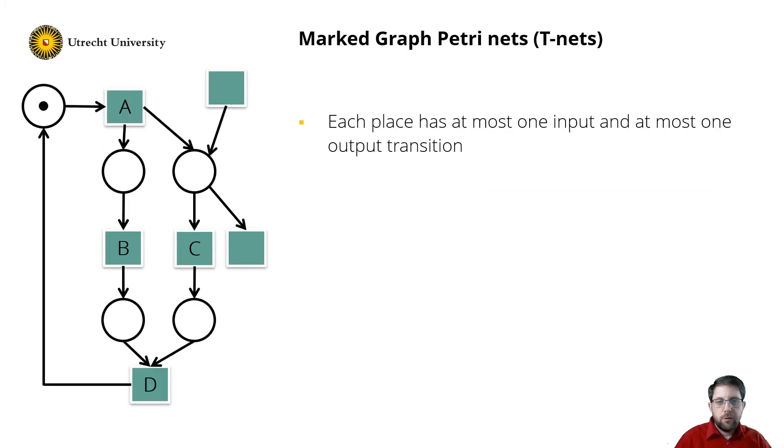The second class I want to introduce are marked graph Petri nets, also called T-Nets. They are the dual of state machines. So instead of requiring each transition to have exactly one input and one output place, we do this for places. So each place has exactly one input and one output transition, like this. So in the net on the left, this place does not qualify as it has multiple inputs and outputs. So if we remove those, this is a perfectly fine marked graph.